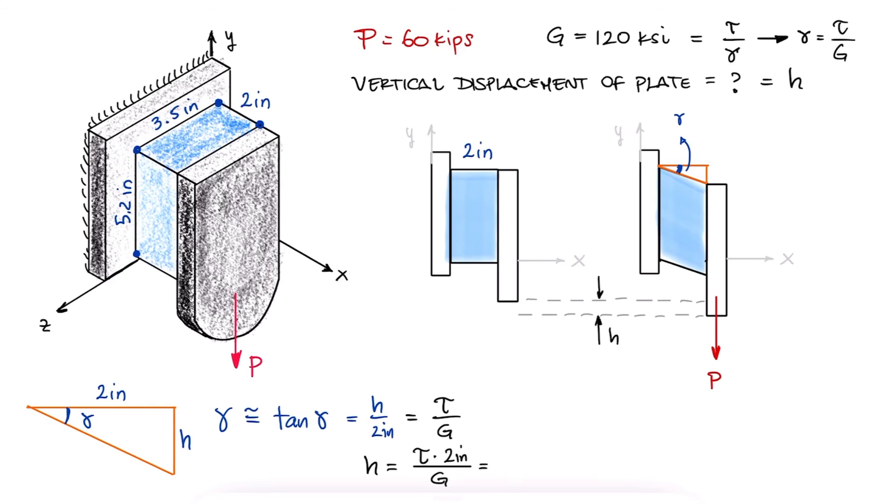What we're missing from this expression is the shearing stress tau. But we know that tau is equal to the shear force V over the area parallel to it.